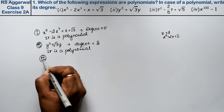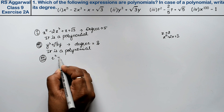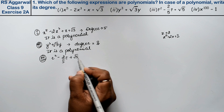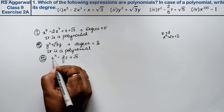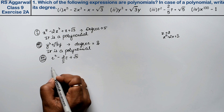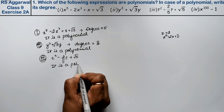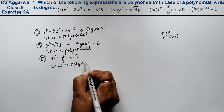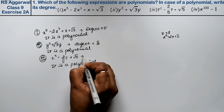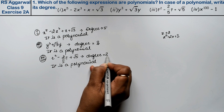Third part is t² minus (2/5)t plus root 5. It is given in the form of a square, so it is a polynomial. Any expression given in standard form is a polynomial. Its highest degree is 2, so the degree is 2.